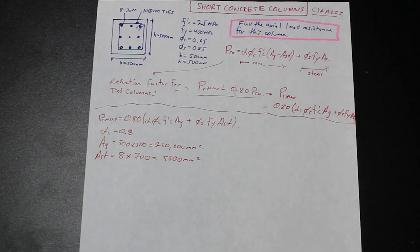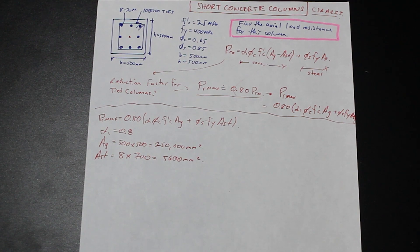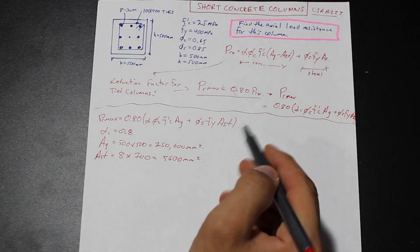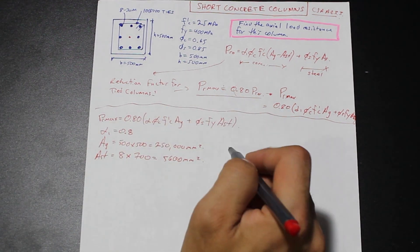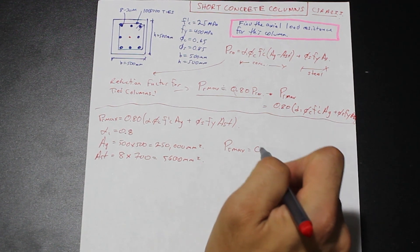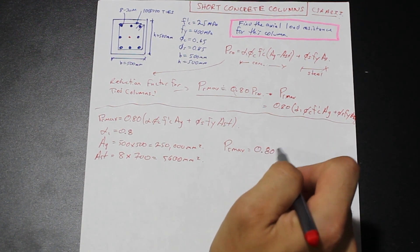Now that's pretty much all we need to use. It's very simple, just plugging into the formula. And we can go ahead and do that now. So let's plug in. So our axial load resistance is simply, let's take our reduction factor of 0.8.